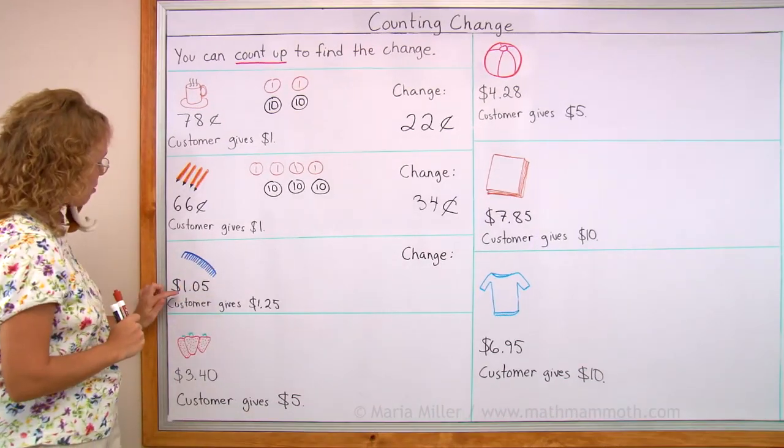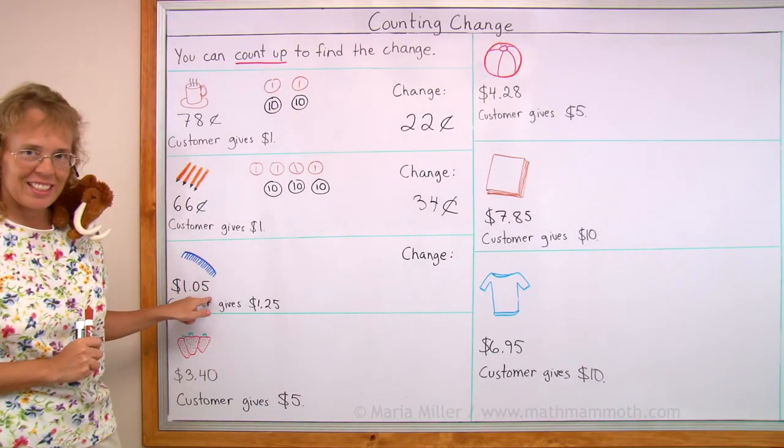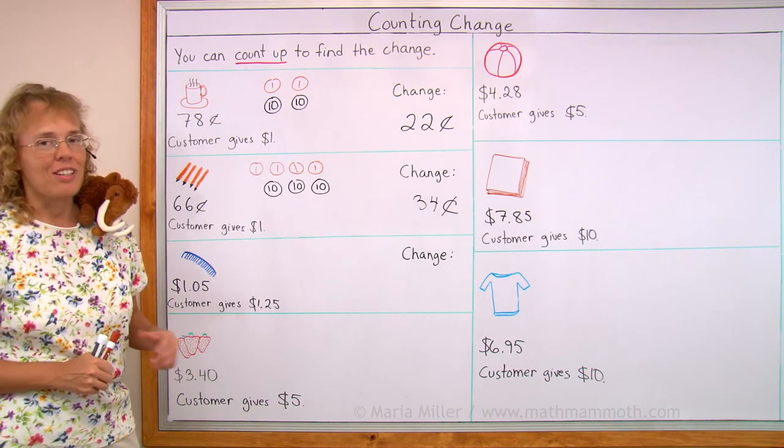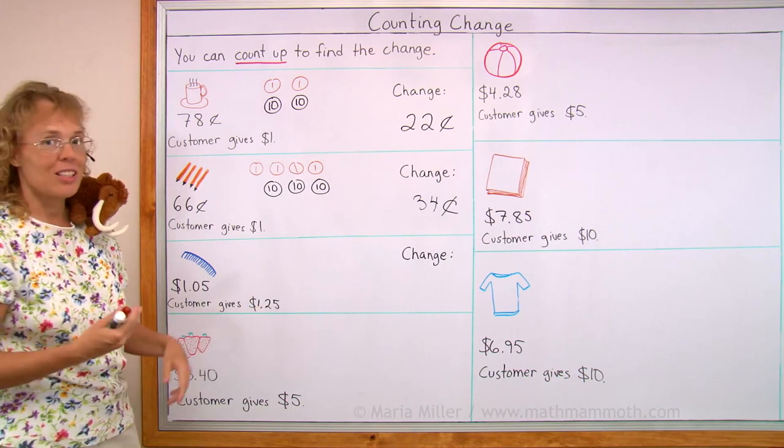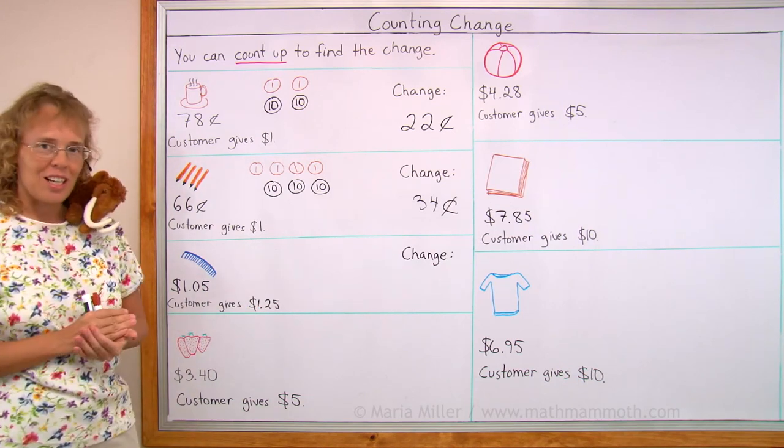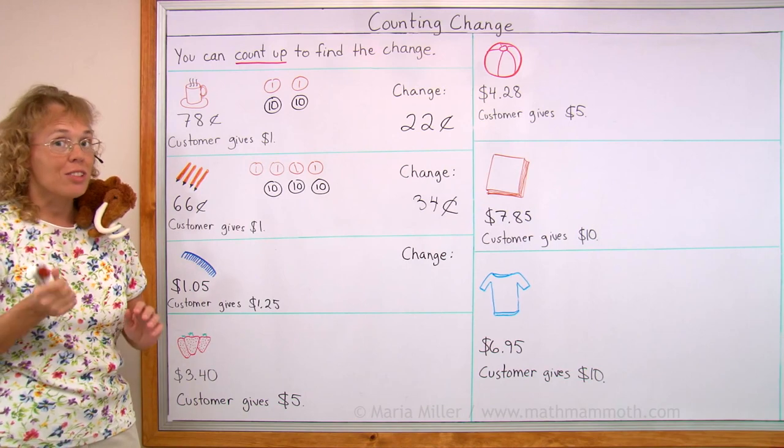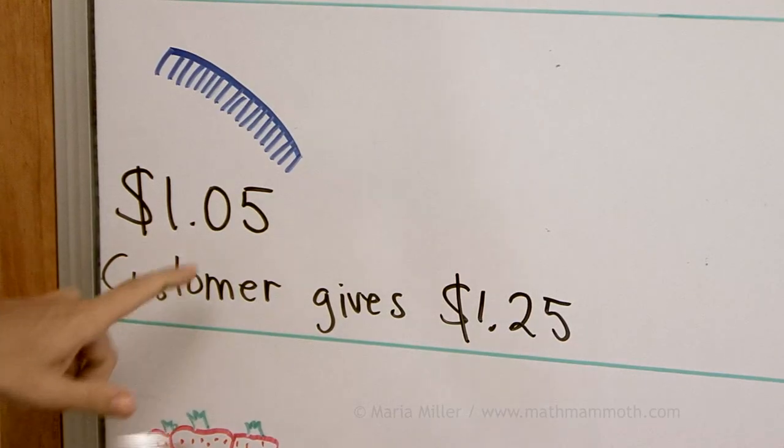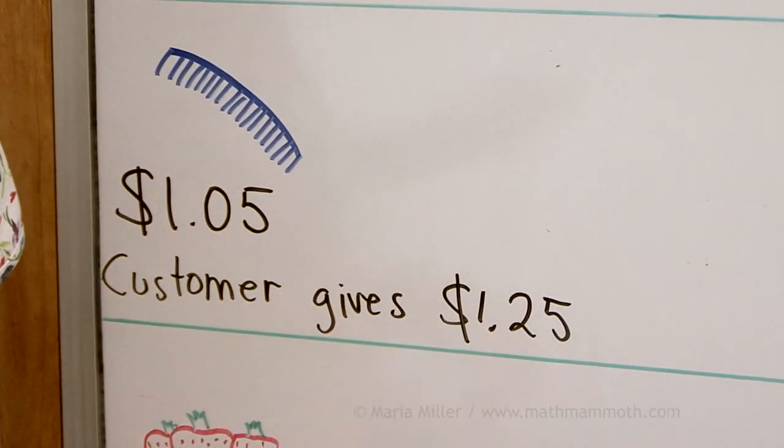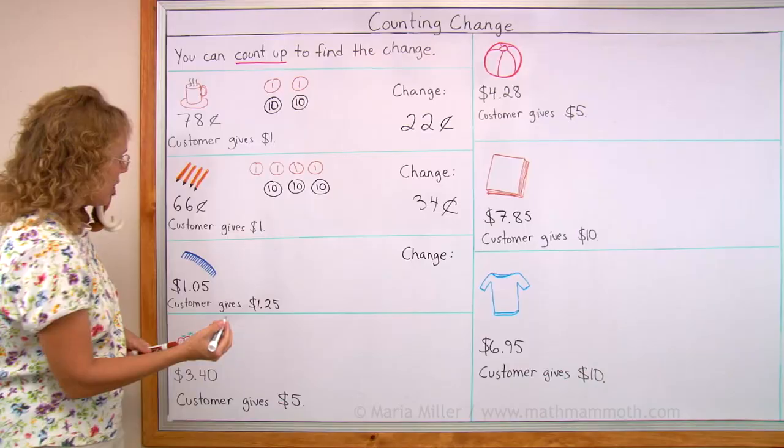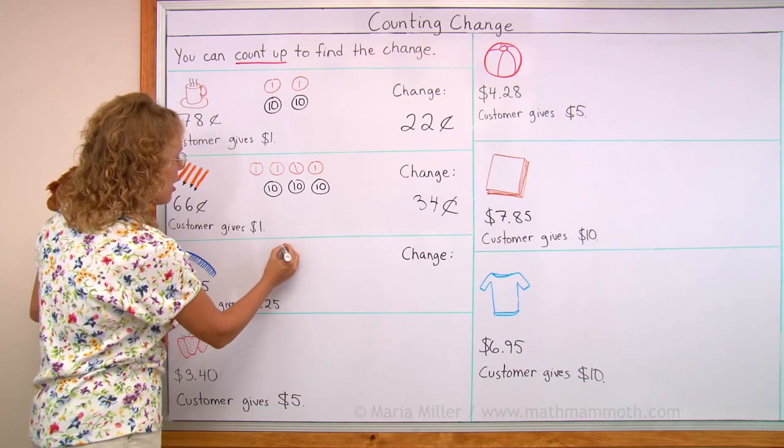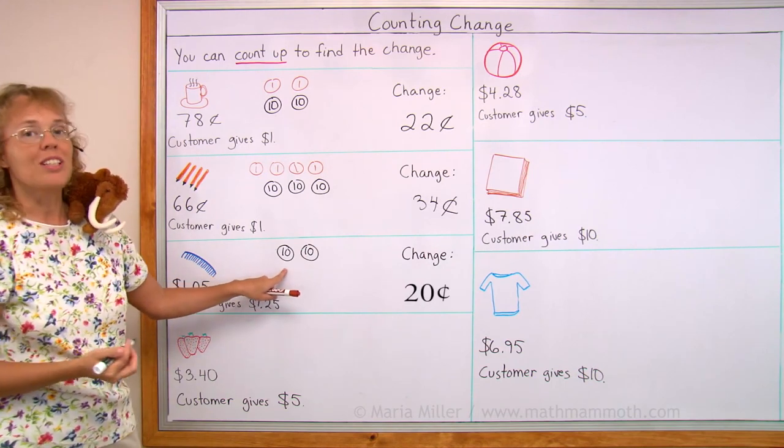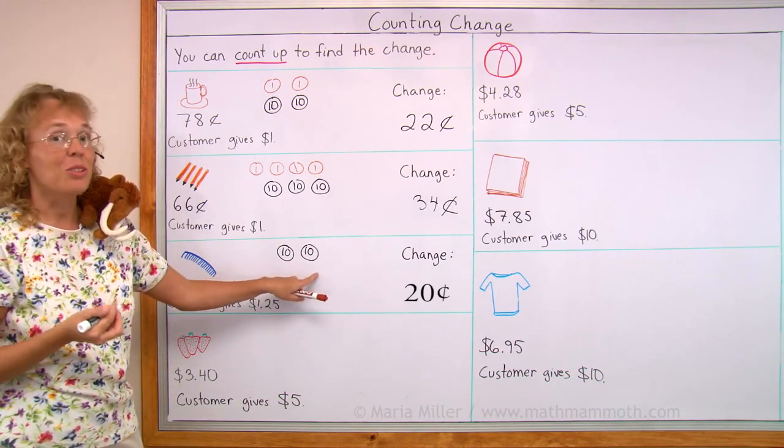Over here, a comb that costs one dollar and five cents. The customer gives one dollar and 25 cents, which would be one dollar and a quarter. And again, we can count up. We can also, if you can figure it out, just look at the difference of these two numbers. I can see that the difference is 20 cents. So that is the change. And if you're counting up, that will work too, from 5 cents to 15 and then to 25 cents.